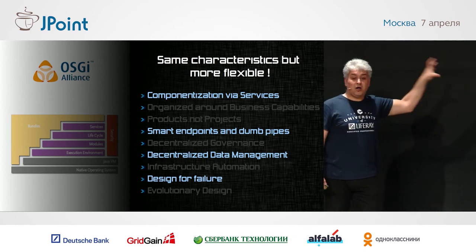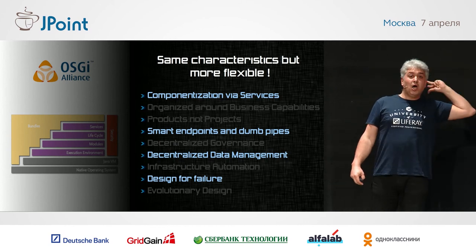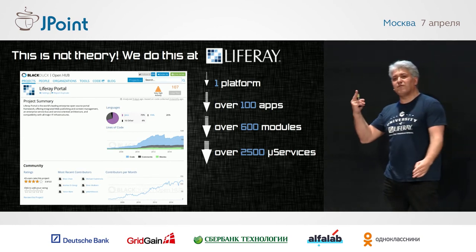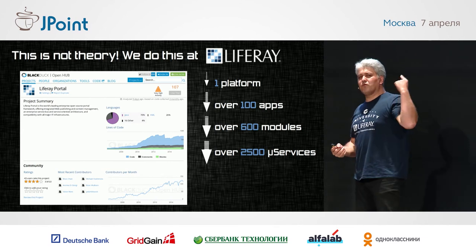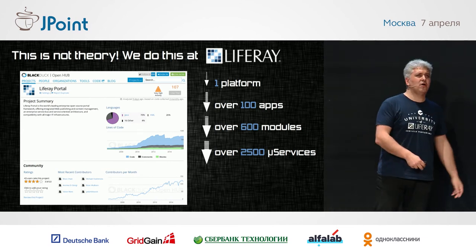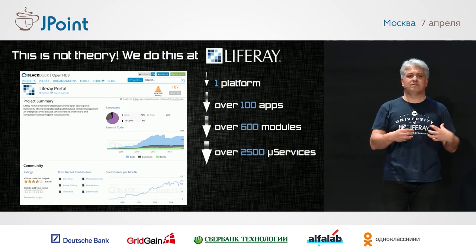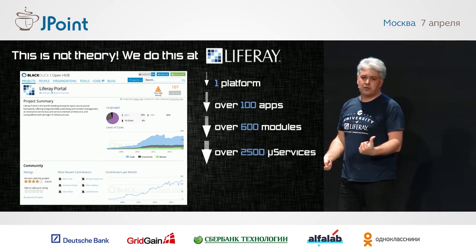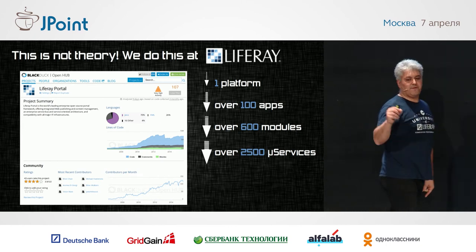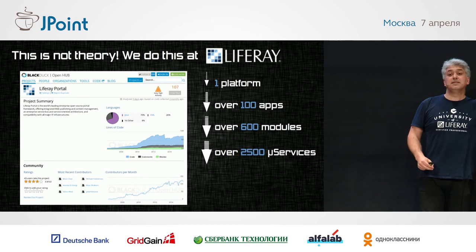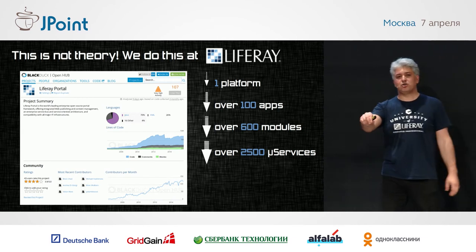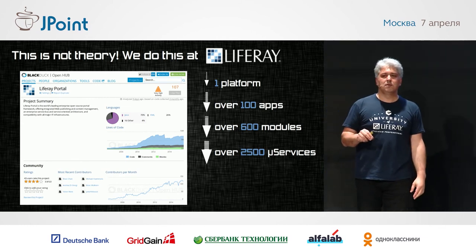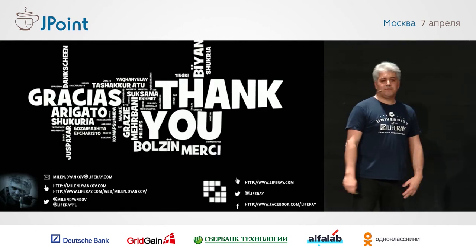The key point: modularity is what you aim for — not modularity by putting stuff in a folder and giving it a name, but modularity in the full sense of the word. Once you have this, you're good to go. You don't need microservices to do modularity. At Liferay, we have one platform we can deliver as a single piece: over 100 apps, over 600 modules, and over 2,500 microservices inside of it. It can run as a single piece on one machine, or it can run distributed. The difference is: if I have an architecture that can run on my single laptop, I can test it on my laptop. If my architecture only works in Amazon cloud with 355 nodes, there's no way for me to test that. Thank you.